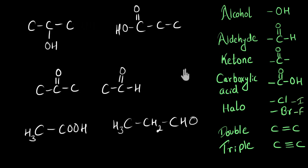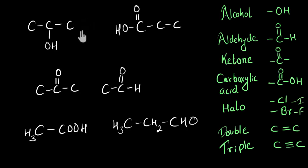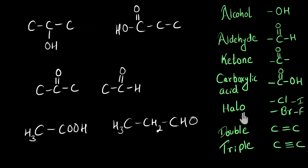Now one last thing. On the screen you can see some carbon compounds and all of them have some functional groups attached to them. You might also notice that there are some carbon atoms which are missing some hydrogen atoms. For example, this carbon atom can have three more hydrogens attached to it — but don't worry about them; I have not written the hydrogen atoms so that we can focus more on the functional groups. I want you to pause the video and figure out which functional group is attached to which molecule. For your reference, I have written all the functional groups and their names on the side.